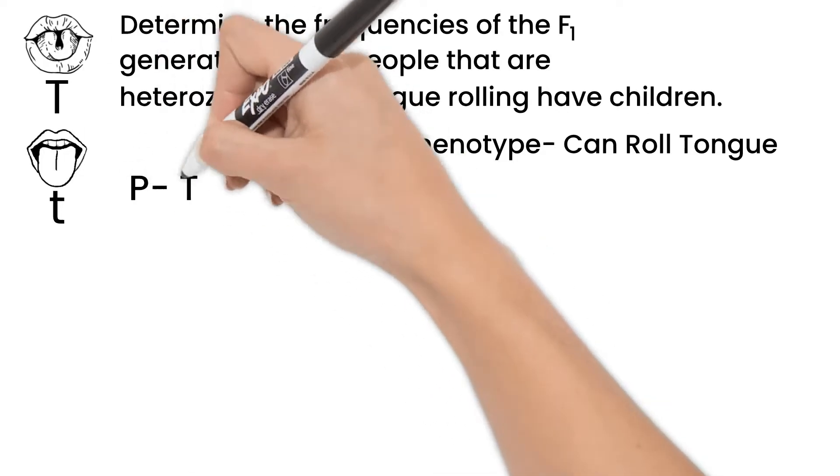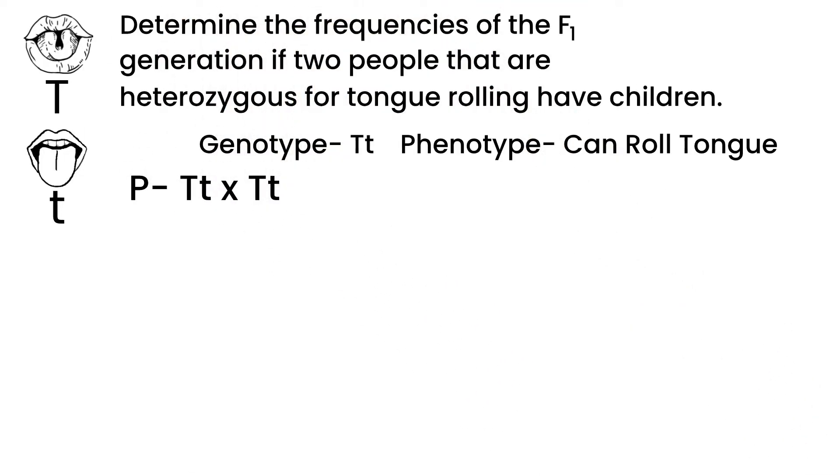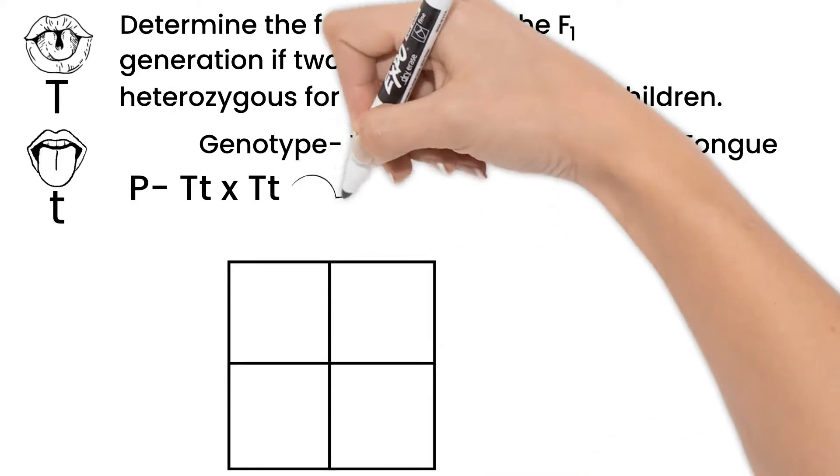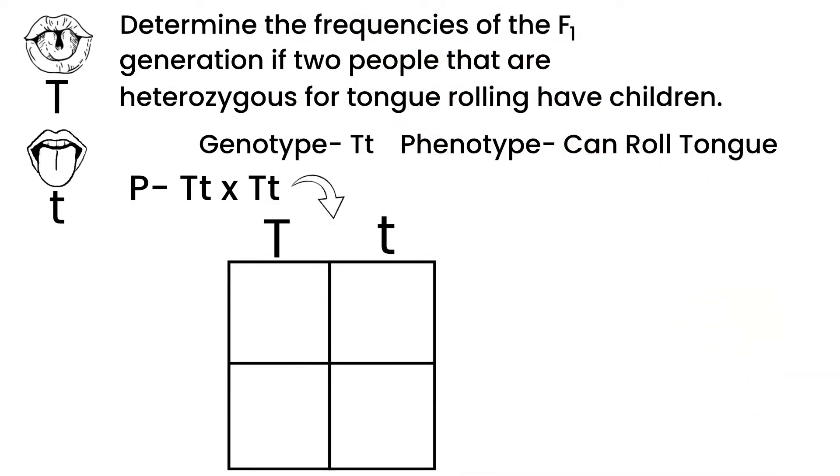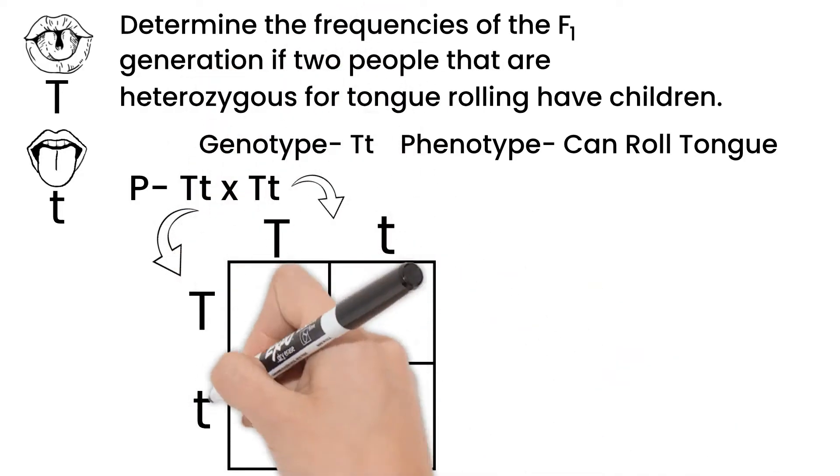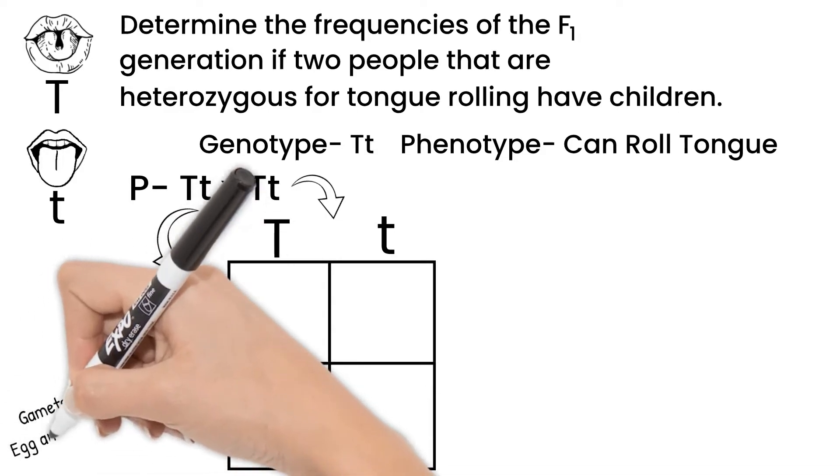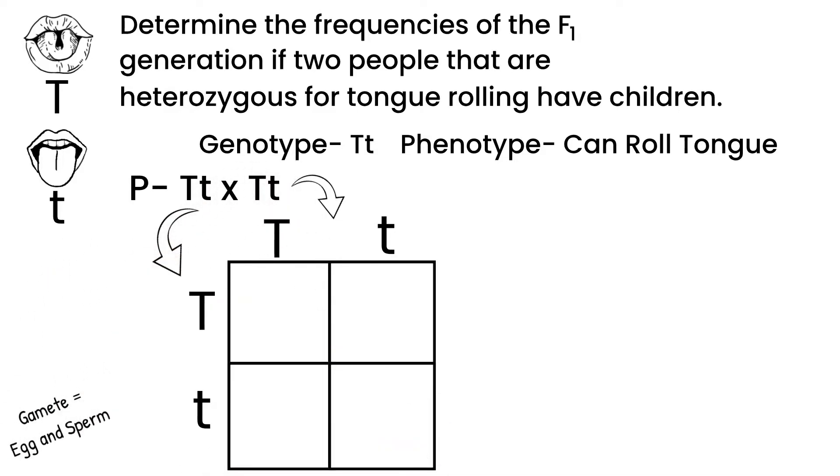So our parent generation would be written like this, and we're crossing them. To determine our F1, we'll use a Punnett square. One allele from the first parent goes above each box, and one allele from the second parent goes to the left of each box of the Punnett square. This represents the possible gametes formed from each parent. Inside the Punnett square, we combine the possible gametes to show what possible alleles their kids would get.